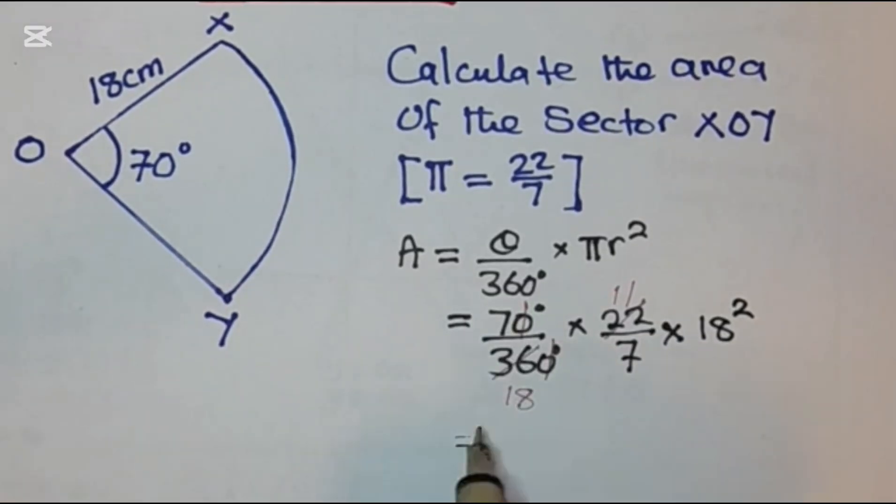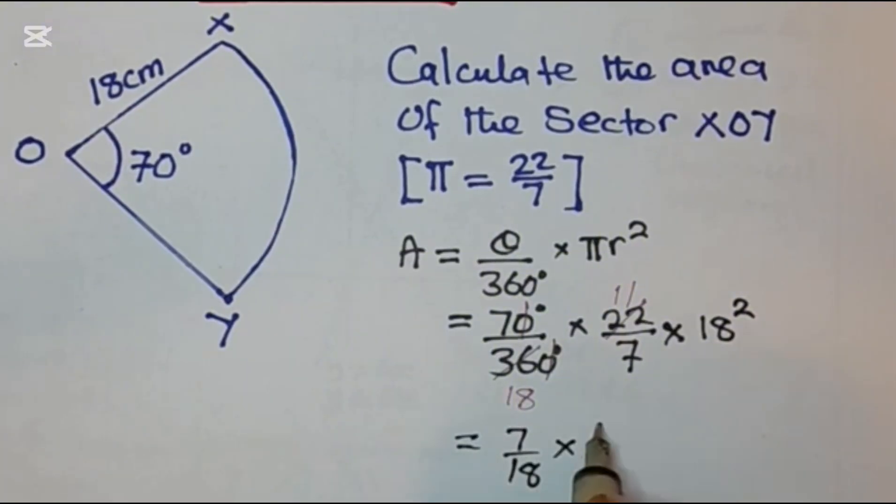So what is remaining now here is 7 over 18 times 11 over 7 times 18 squared, which is the same as 18 times 18.